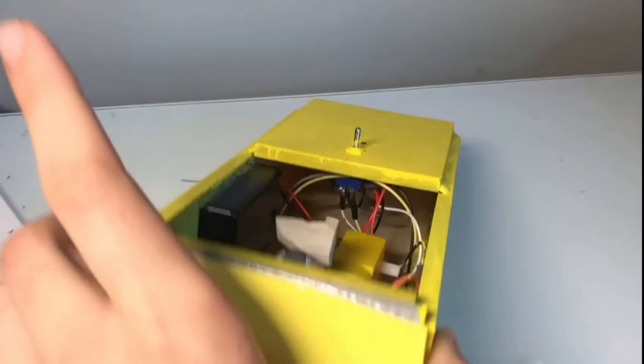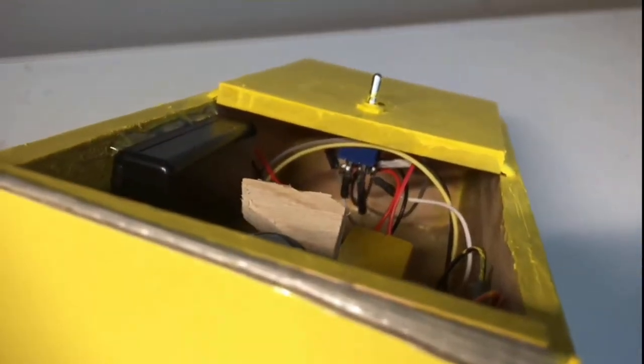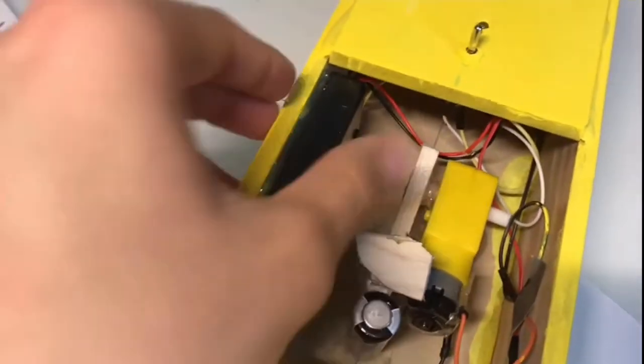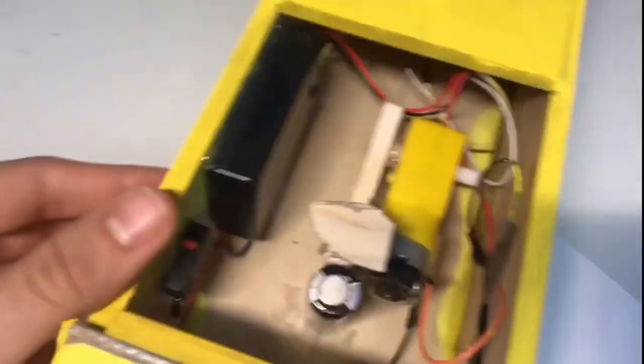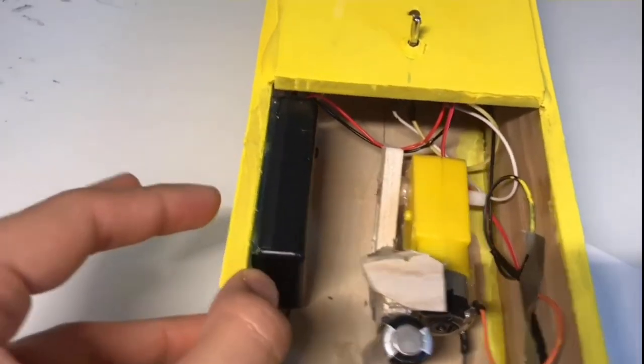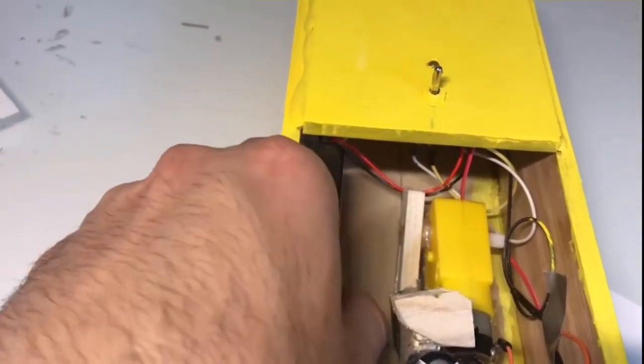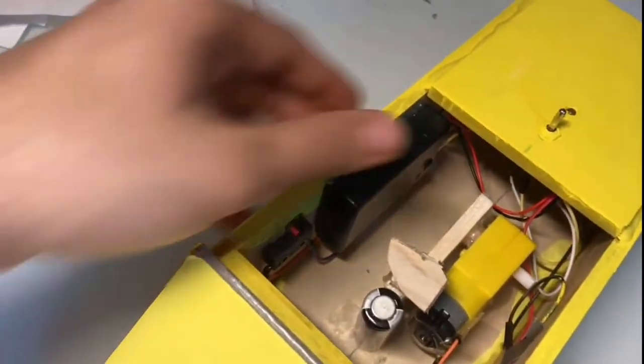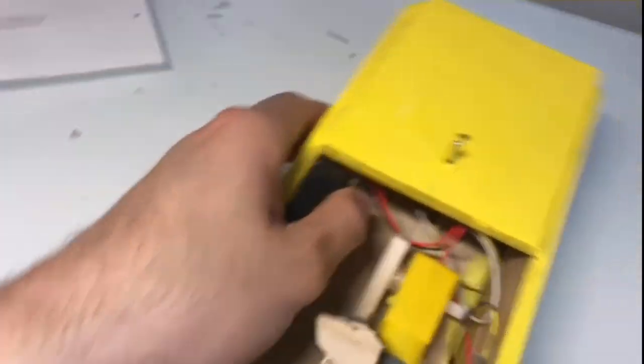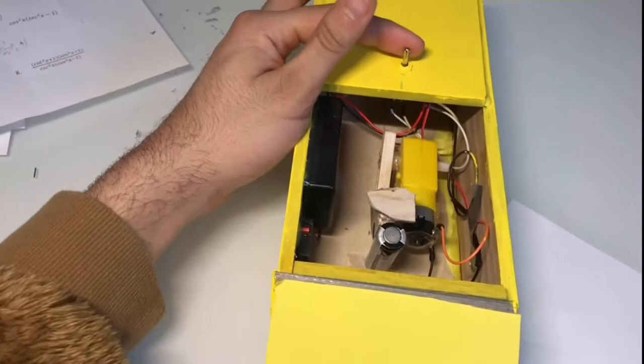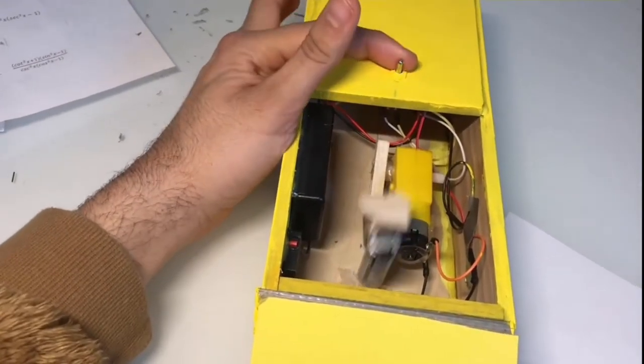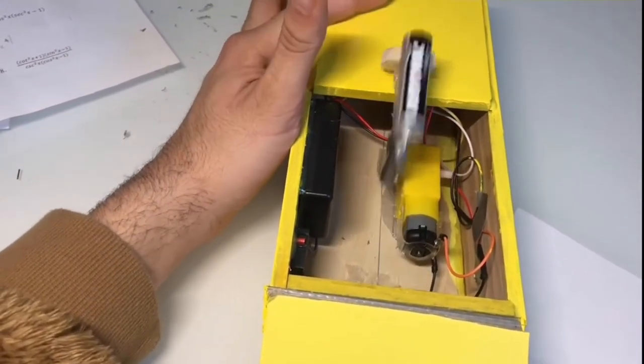You just connect all the wires inside the box like so, and you screw on the switch from the top. You connect your battery pack, hot glue it on the side, and that's about it. Then you test it and turn this on. If I can switch it right here, and that's about it. It works.